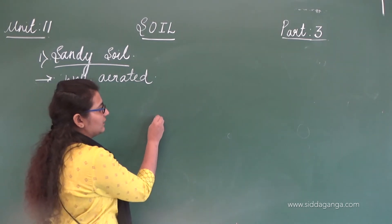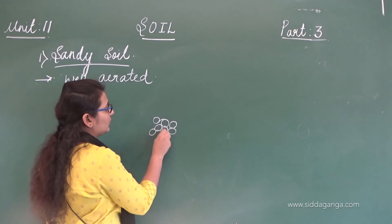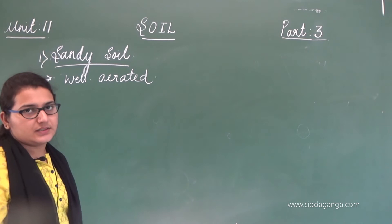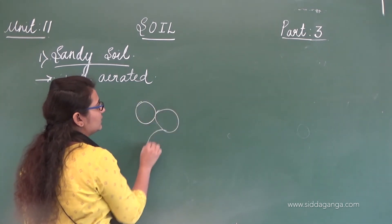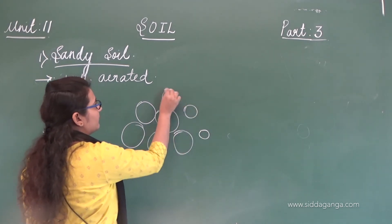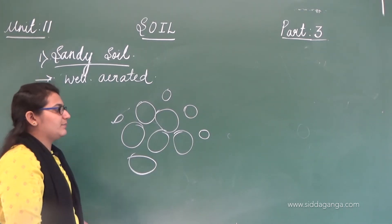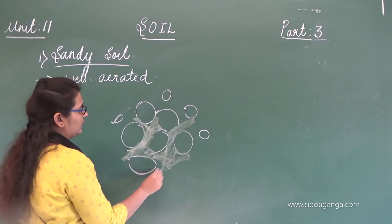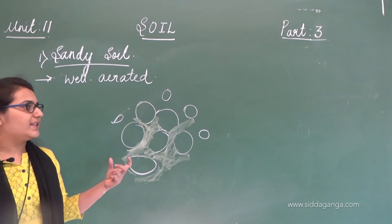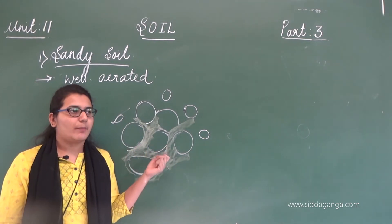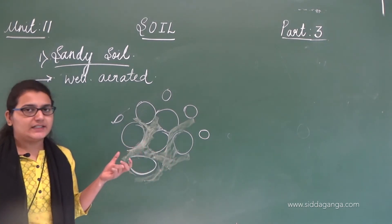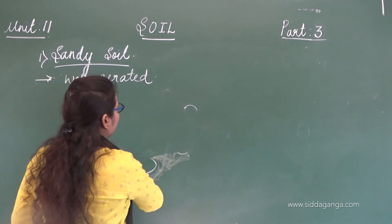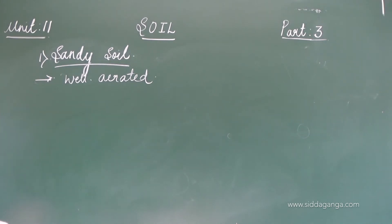If we are having small particles, they will be arranged with less air spaces. But in sandy soil, we have more of big particles, and since we have more big particles than small particles, there are large spaces between them. These are the air spaces. The arrangement is not compact — it is kind of loose — and hence we can see air spaces. So it is a well aerated soil.